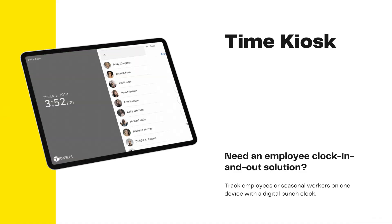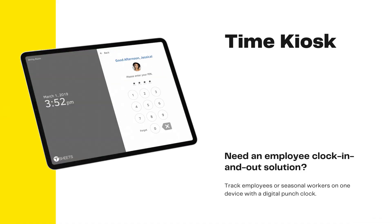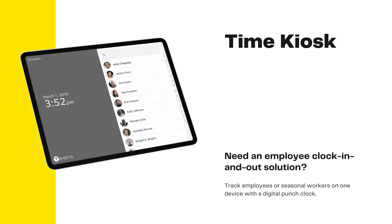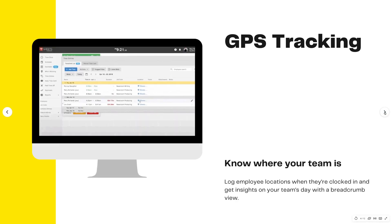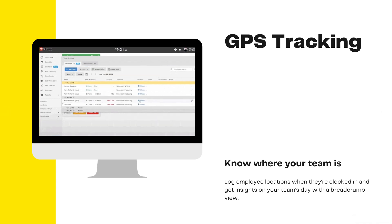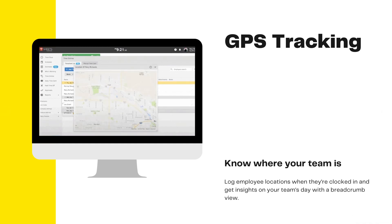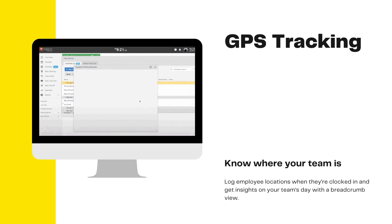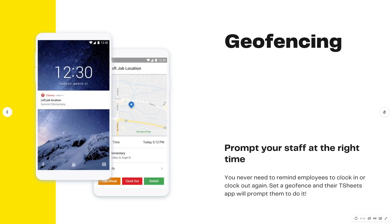Some of those features include a time kiosk so your employees can clock in and clock out by themselves. There's GPS tracking so you can know where your team is, and you can also see an overview of where your team has been during the day using their breadcrumb view.